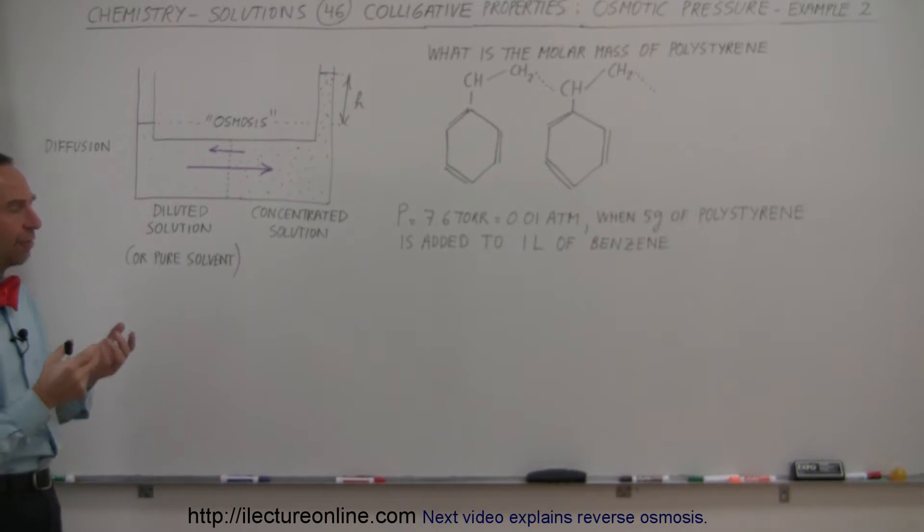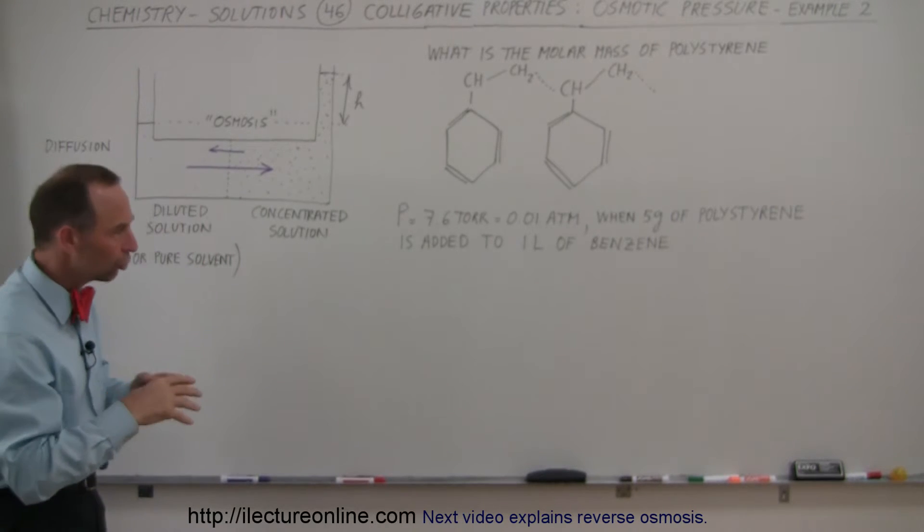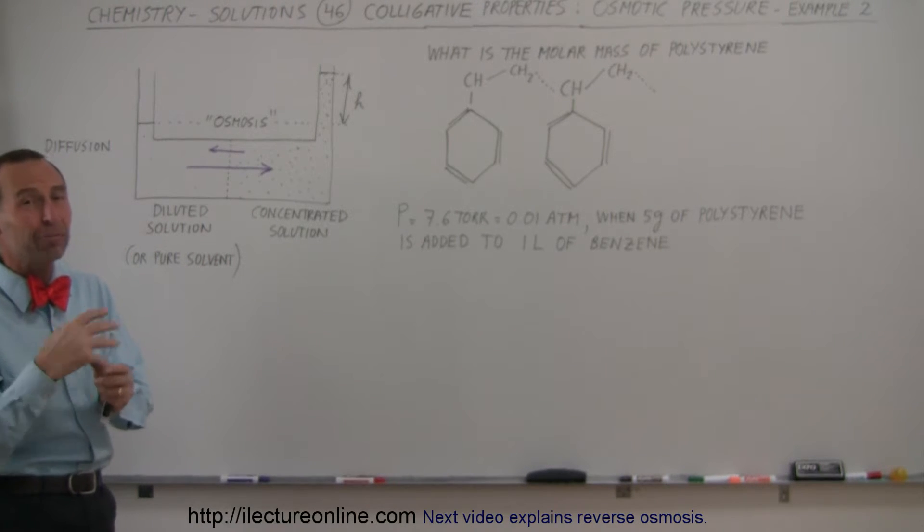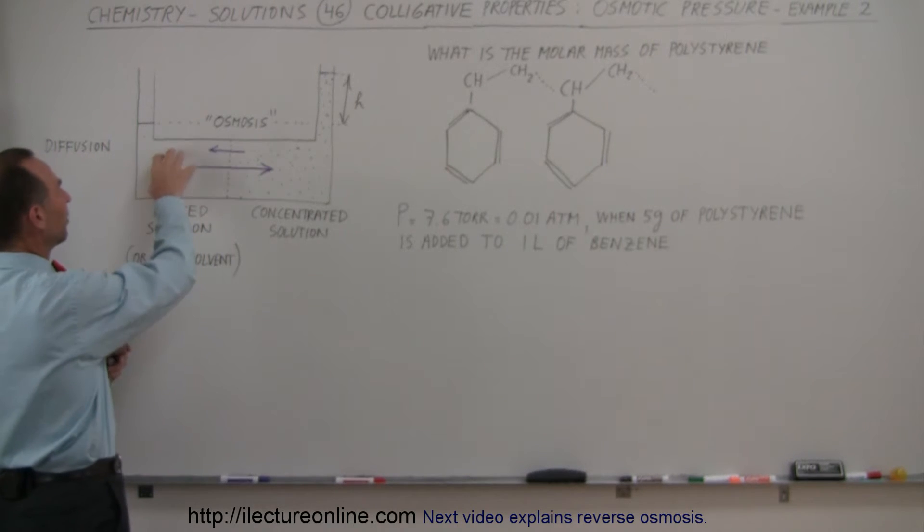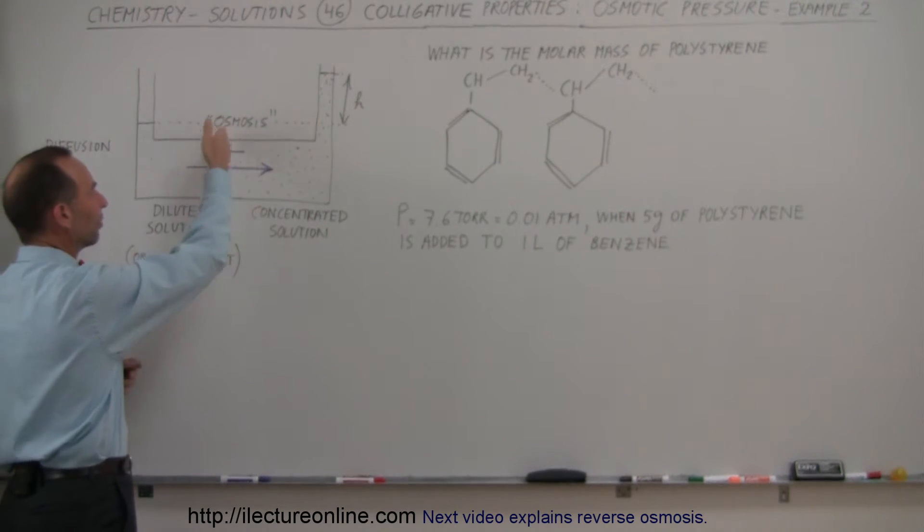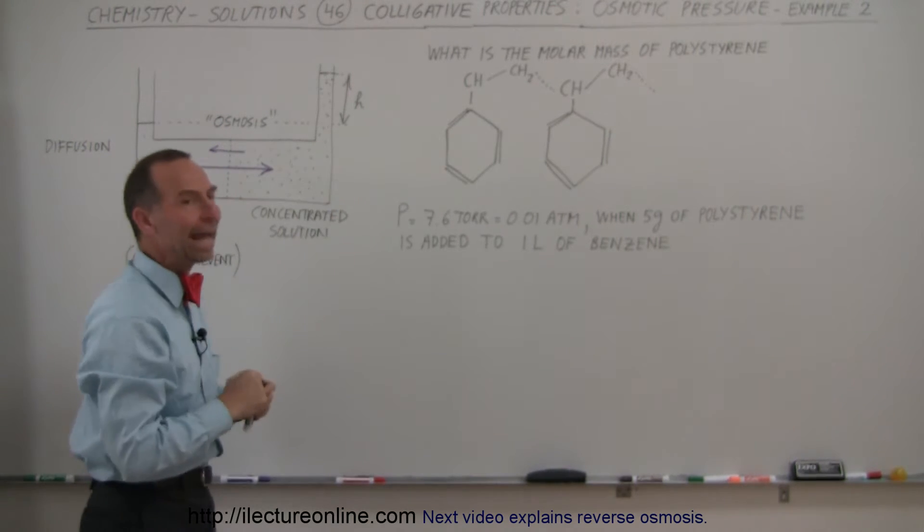So, let's say we want to have a particular sample of polystyrene and we want to know what the molar mass of that is, the mass per mole. And so, let's say we add it to a solution. Now, of course, in this case, we have to add it to benzene. Benzene is a solvent and so we can have pure benzene on one side and on the other side of the semipermeable membrane, we can have benzene with polystyrene added to it.